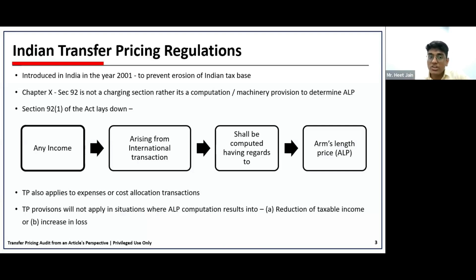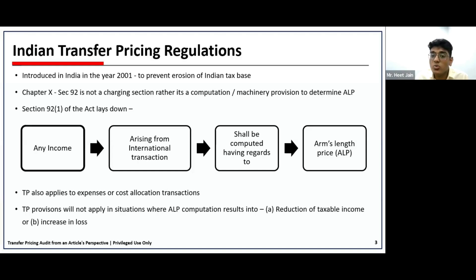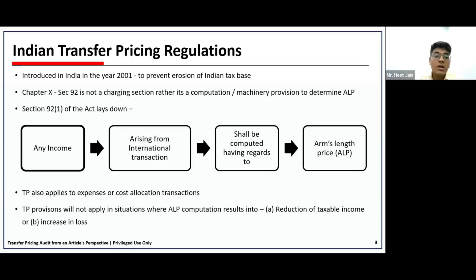With that intent, Chapter 10 was introduced in India, titled as special provisions for anti-avoidance of tax rules. Section 92, being the machinery provision, says that any income which arises from an international transaction shall be computed having regard to arm's length price. Section 92 is not a charging section — unlike sections covering PGBP or salary which charge income on the assessee under the Income Tax Act. Section 92 is a machinery provision, which states that any international transaction happening must have regard to arm's length price.